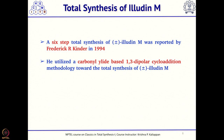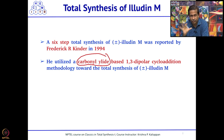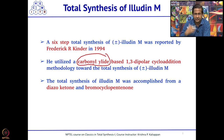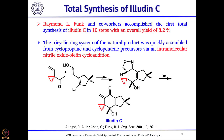Now let us start with illudin M. The total synthesis of illudin M was reported by Frederick Kinder almost 28 years ago. It was a 6-step total synthesis using a 1,3-dipolar cycloaddition between a carbonyl ylide and cyclopentenone as the key reaction to construct the tricyclic compound. Carbonyl ylides are normally made from diazo ketones.